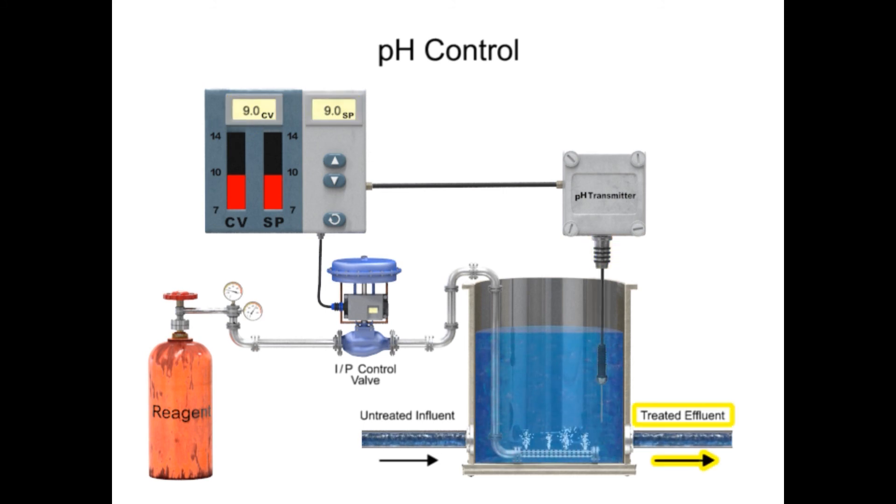The effluent is the treated water that is discharged out of the tank. The process continues to provide the lime softened water at the desired pH level.